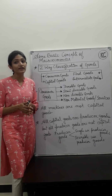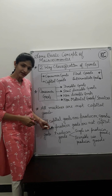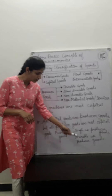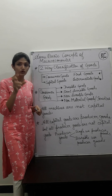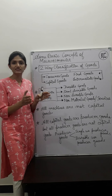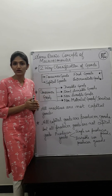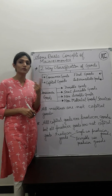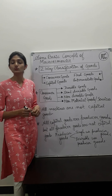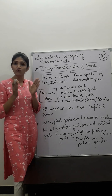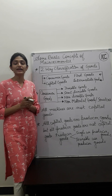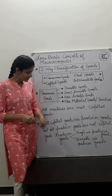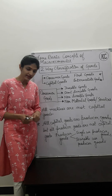So producer goods are of two categories. First is single-use producer goods — raw materials used once in production and finished, which cannot be reused. Second is durable-use producer goods — fixed assets used in production for many years, subject to depreciation, with high economic value. These durable-use producer goods fall under the capital goods category, while single-use producer goods do not.